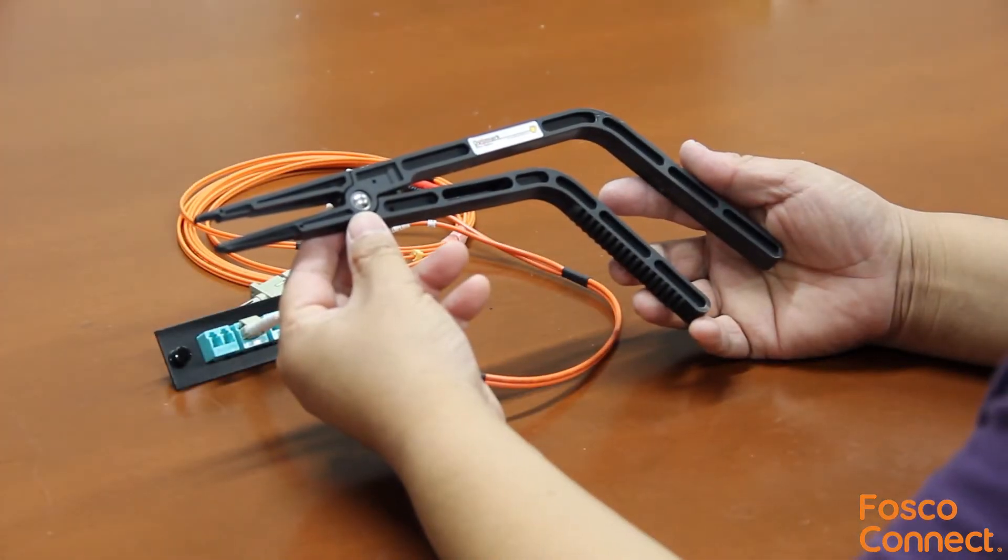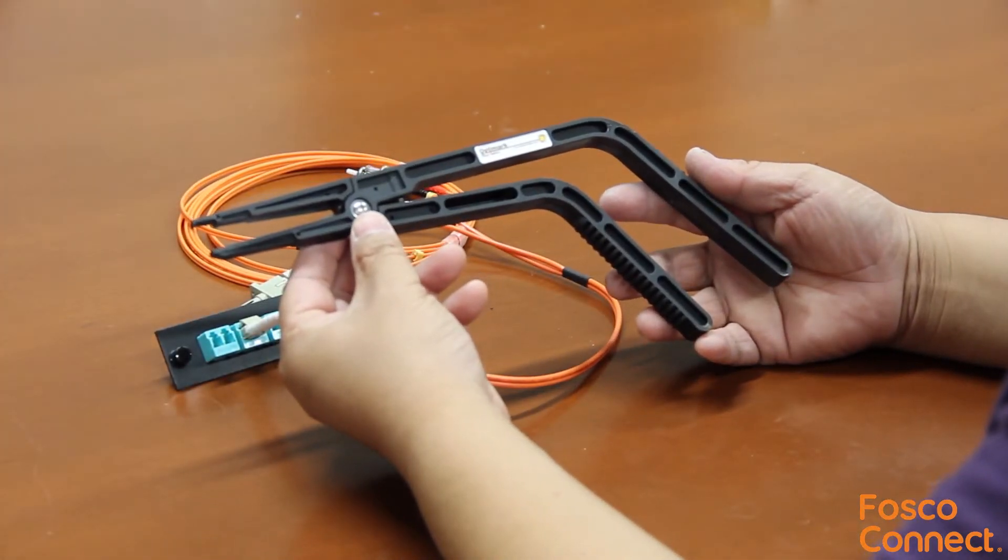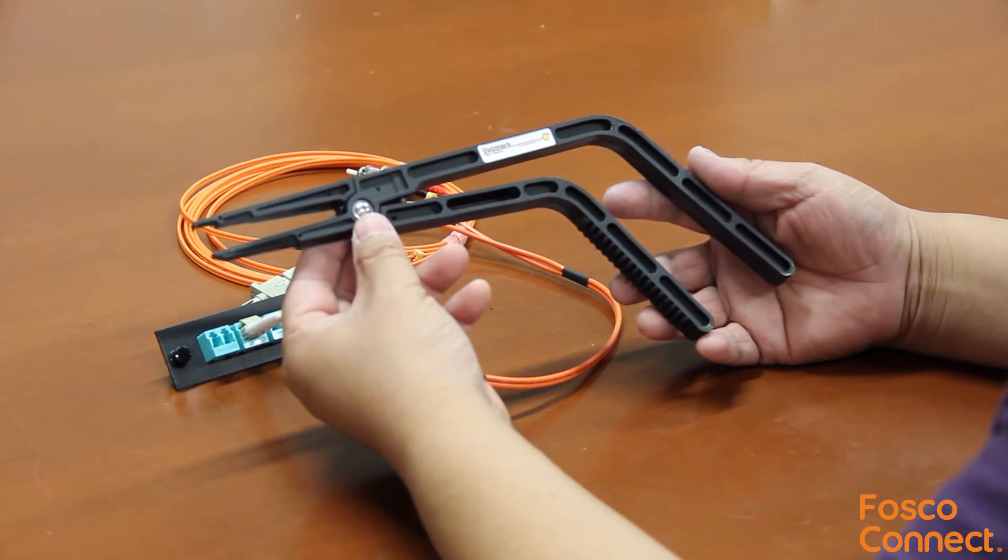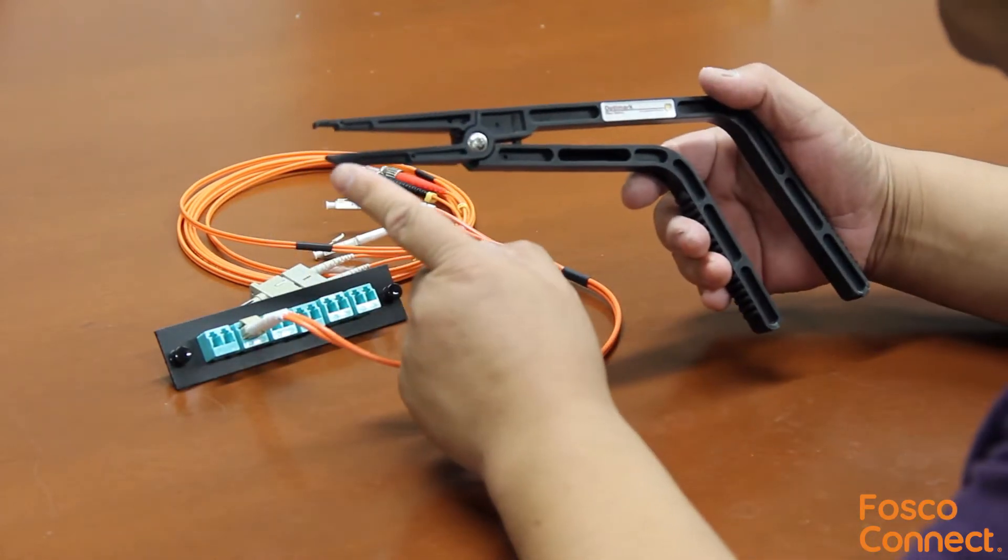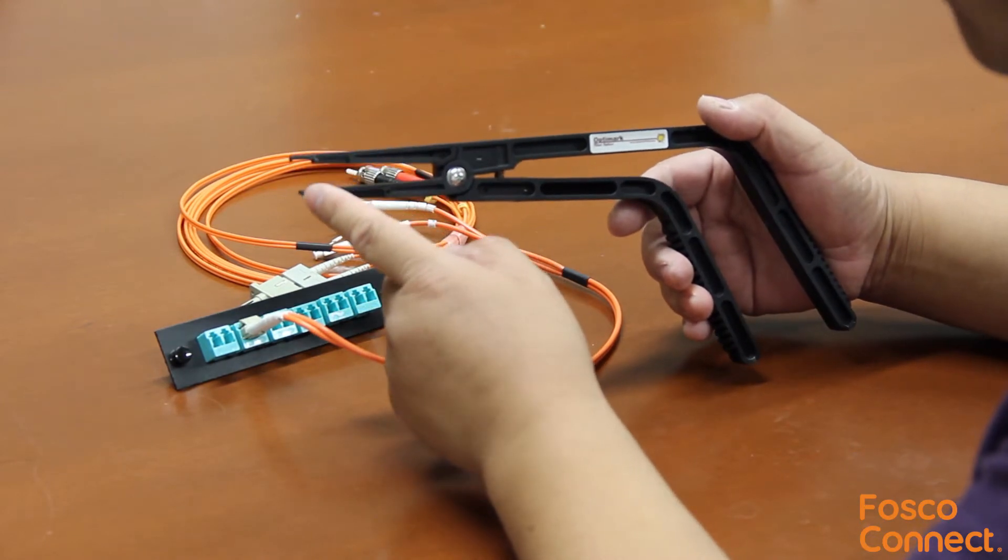This is the skinny finger fiber connector installation and removal tool. It works with SC, LC, MU and MTRJ. It has a square cavity and works with virtually all square and rectangular connectors.